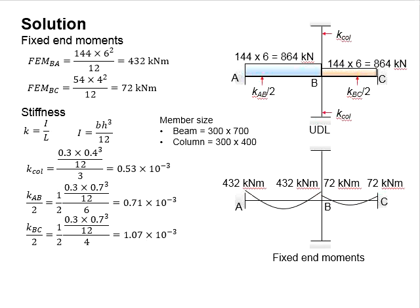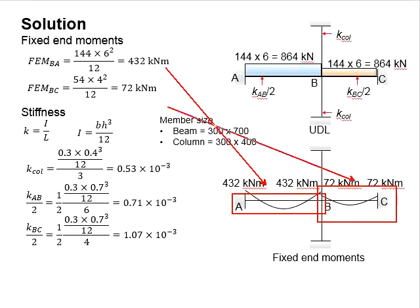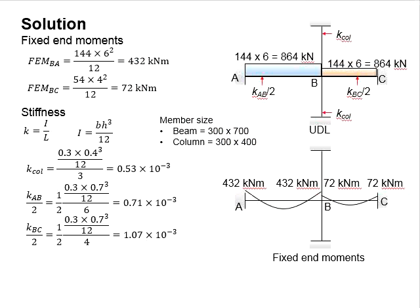Next, we need to determine the moment acting on the column. First, we need to determine the fixed end moment acting at the end of the beam. It is calculated using the equation WL²/12. WL²/12 is used to determine the fixed end moment of a continuous beam. For member AB, the fixed end moment is calculated as 432 kNm, while member BC is calculated as 72 kNm.